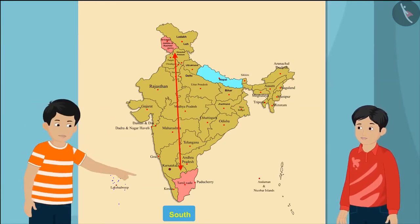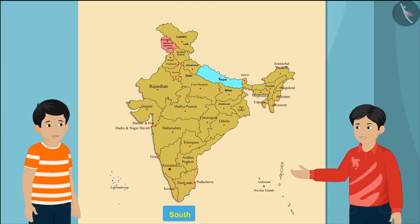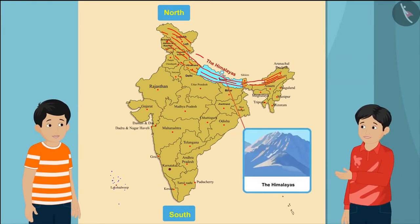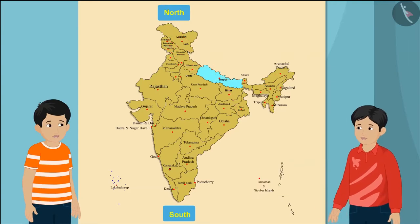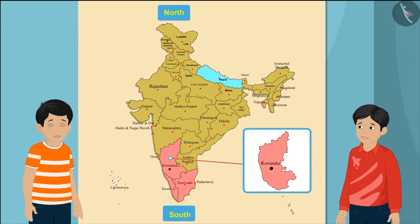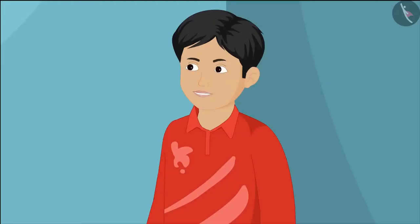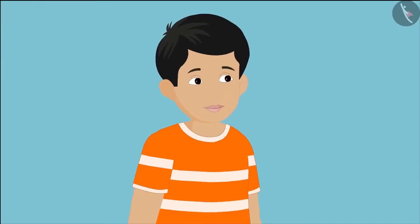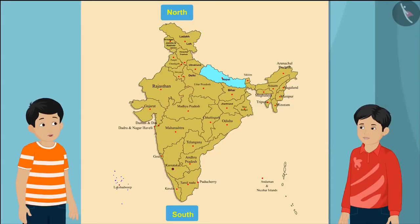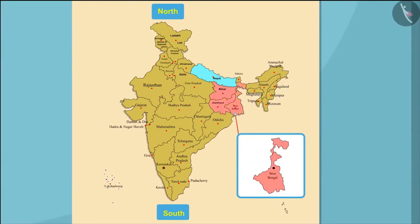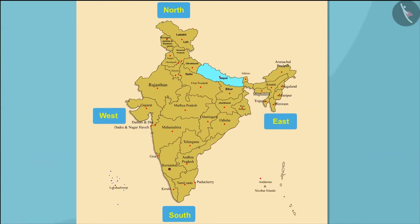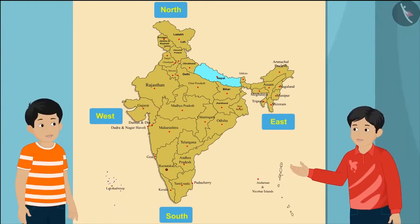Jammu and Kashmir and Tamil Nadu are in opposite directions. Yes, Jammu and Kashmir is in the northern part of India. Not only this, do you know that the vast Himalayan mountain range is also in the northern part of India? Tamil Nadu, Kerala, and Karnataka — all these states are in the southern parts of India. By looking at the map, Bihar, Jharkhand, and West Bengal are in the east direction. And the states of Gujarat and Goa lie in the west direction.